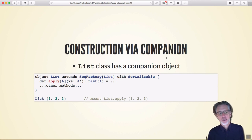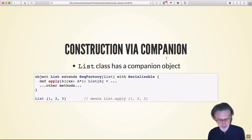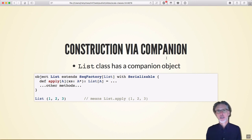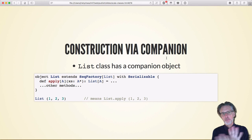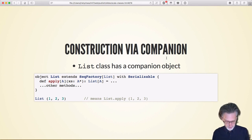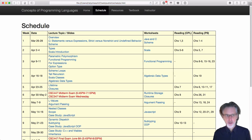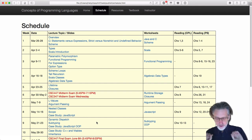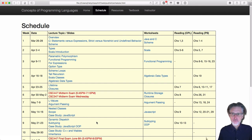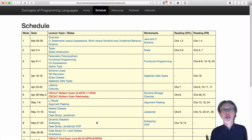We've already been using this with Lists. When we write 'List(1, 2, 3)', that's actually invoking the apply method of the companion object of List. You can explicitly write 'List.apply(1, 2, 3)' and that does the same thing. That covers the basic ideas of object-oriented programming in Scala — we'll come back to this when we talk about subtyping and more sophisticated features.